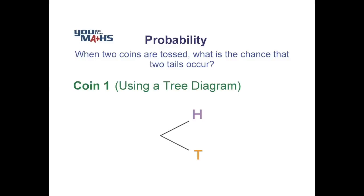Then what we do for the next step is we look at the instance where a head occurs, and say, if we threw a head on the first coin, what are the possibilities for the second coin? Likewise, if we threw a tail on the first coin, what are the possibilities for the second coin in that instance? So we branch off from each case from the first coin.